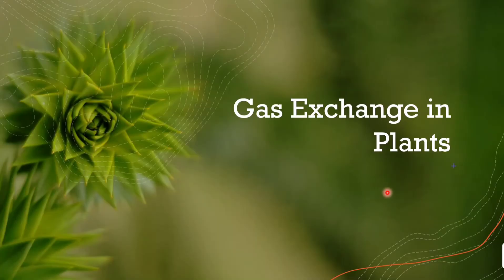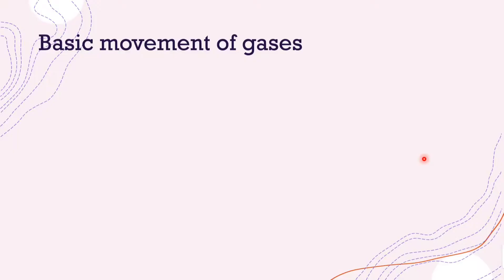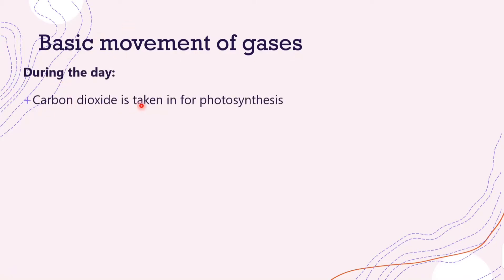Today's video is on gas exchange in plants. First, we're going to look at the basic movement of gases through a plant. During the day, carbon dioxide is taken into the plant for photosynthesis because carbon dioxide is one of the reactants in this reaction, and oxygen is released because oxygen is produced by photosynthesis.